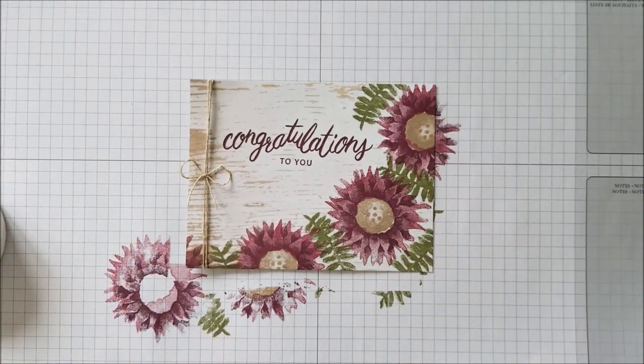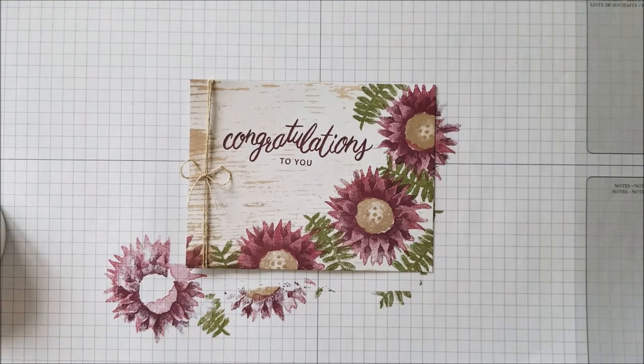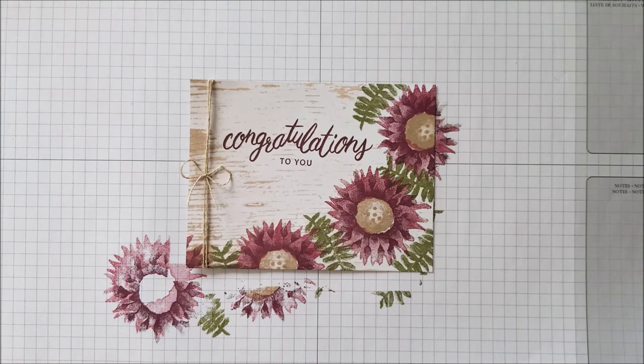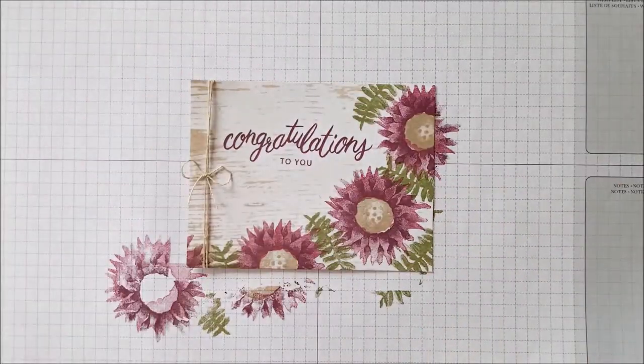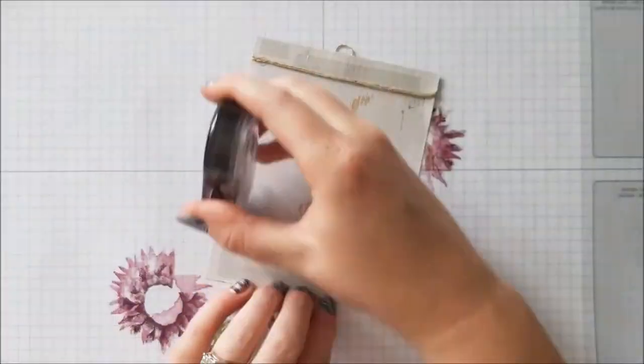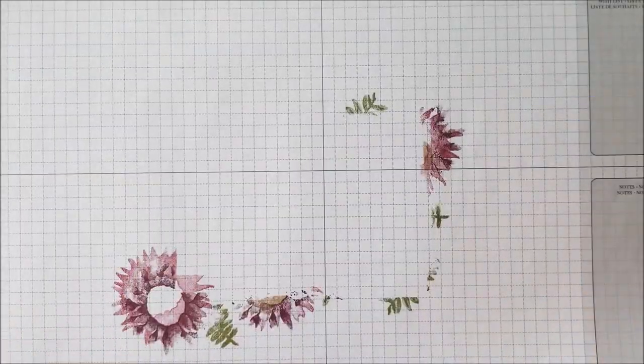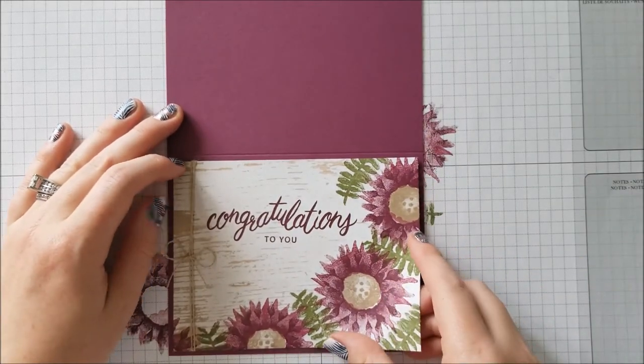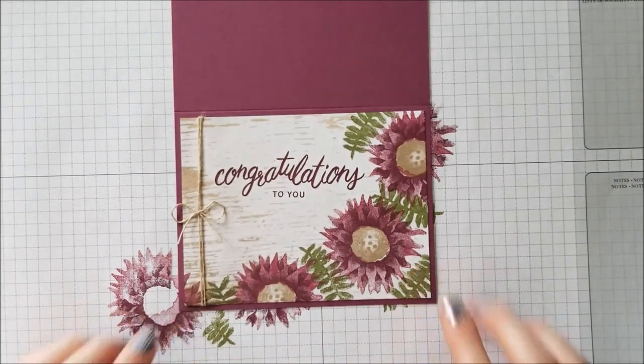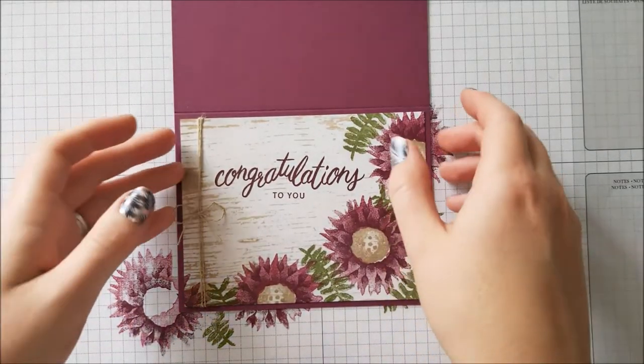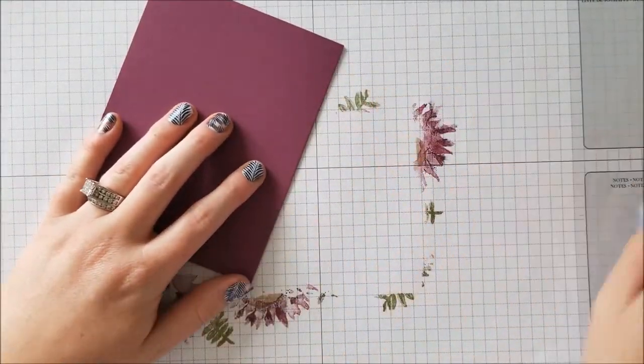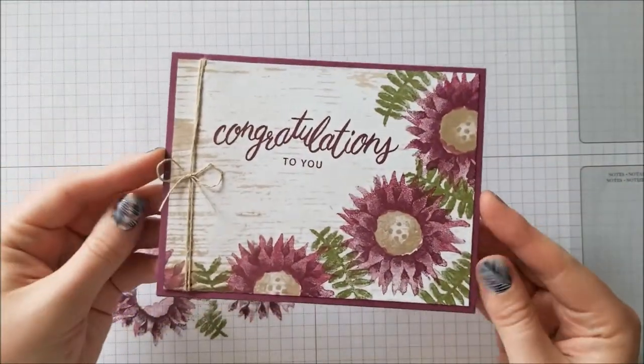So now we've finally got that bow tied. I'm so sorry, I don't know why I'm so bad at those, but I am. So now we can go ahead and attach it to our card base. And then from here, we can go ahead and just fold our card in half. And there you go. There's our completed card.